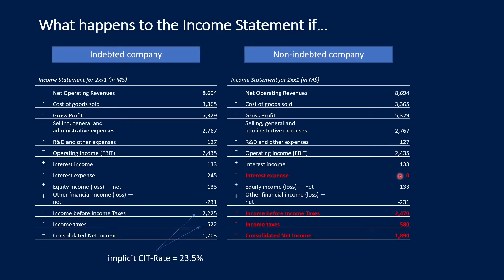Since there is no interest expense, the income before taxes is higher, and since the income before income taxes — which is the tax base — is higher, the income taxes have to be higher too. Thus the consolidated net income is higher because the interest expense effect is the larger effect. Nevertheless, there is this counter effect on income taxes. We now call these income taxes for the non-indebted company 'adjusted tax' — so if our starting point is the indebted company and we would like to see how it would look if non-indebted, we call the income taxes 'adjusted tax.'